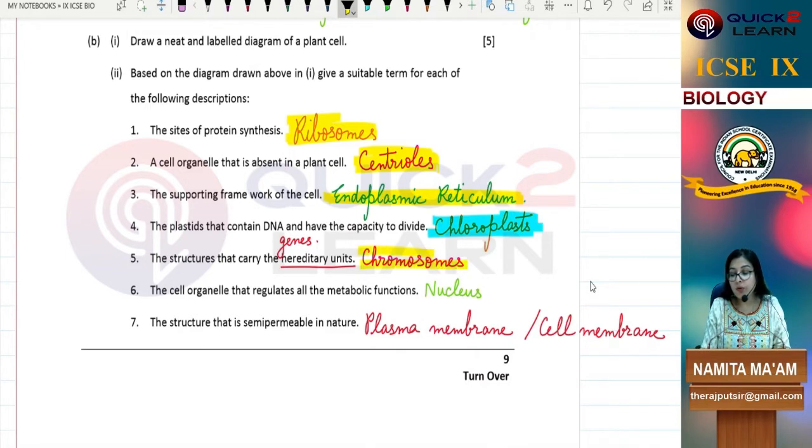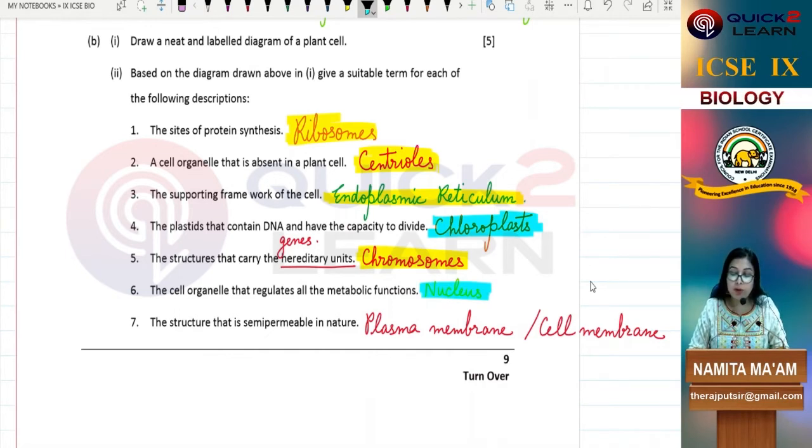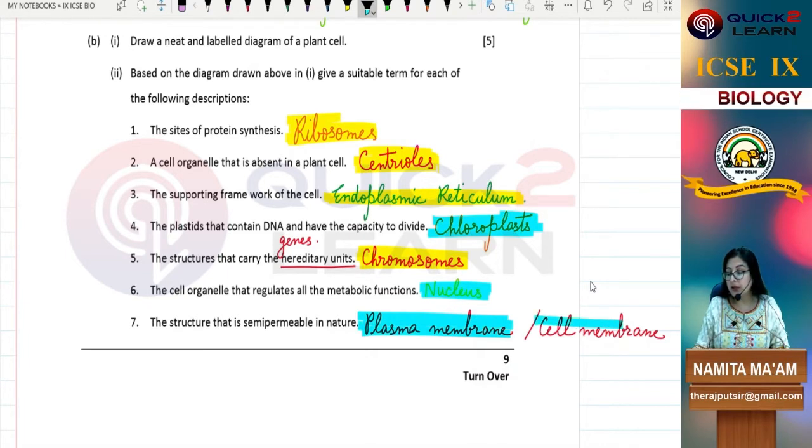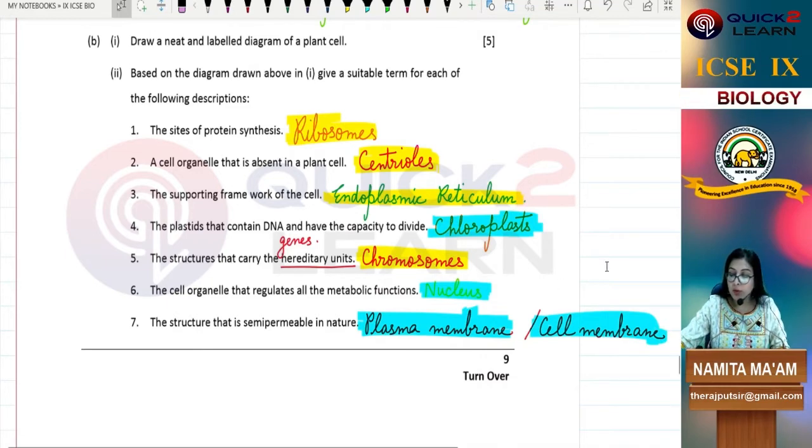Genes - where are the genes? In the chromosomes. The cell organelle that regulates all the metabolic functions is the nucleus. The structure that is semi-permeable in nature - semi-permeable, partially permeable - that is our plasma membrane or our cell membrane.